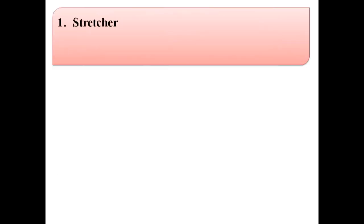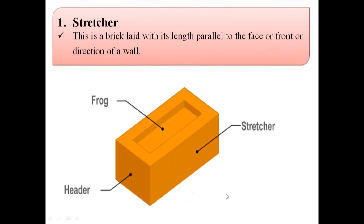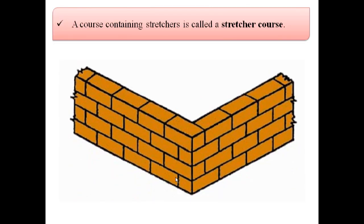The first technical term is stretcher. As shown in this image, a stretcher is a brick laid with its length parallel to the face or front or direction of a wall. A course containing stretchers is called a stretcher course. In this image we can see all these courses contain stretchers, so this is known as a stretcher course.